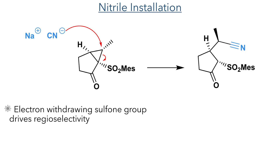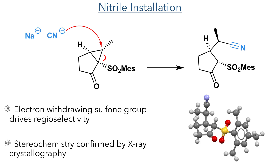The newly installed cyclopropane could then be opened by a cyanide nucleophile. This acts in an SN2 fashion to open the ring and form the nitrile with inversion of stereochemistry. The regiochemistry of this reaction is driven by the electron-withdrawing sulfone and carbonyl groups, which are able to stabilise the negative charge built up during the reaction. This produced the product in a 99% enantiomeric excess, with the stereochemistry confirmed by X-ray crystallography.